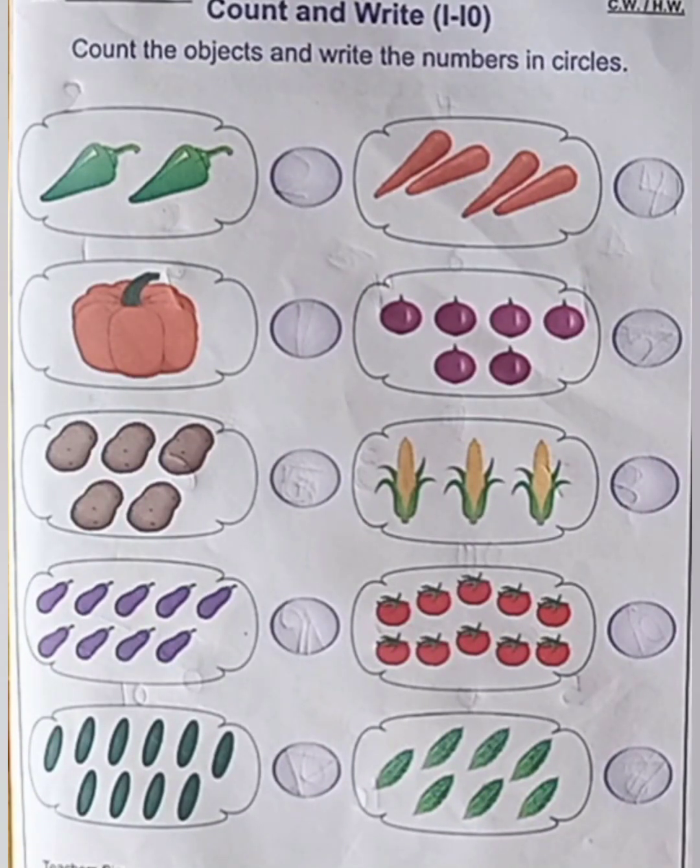First, you have to count the objects and write in the given box. Okay? First object is chili.